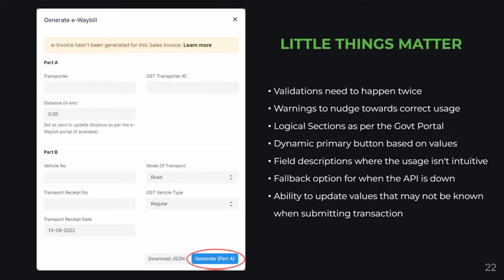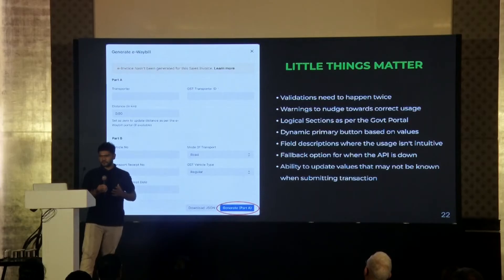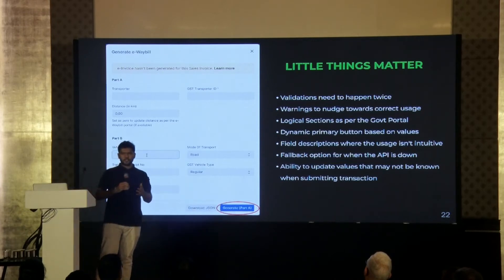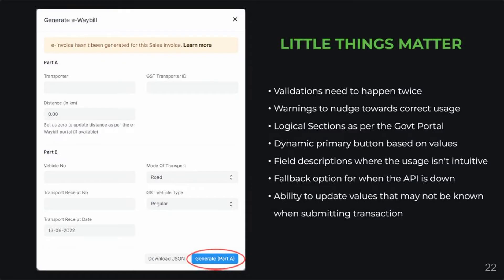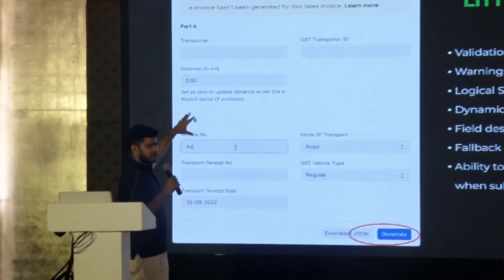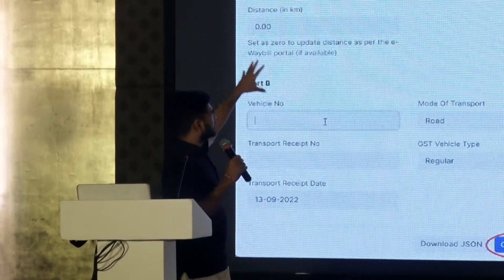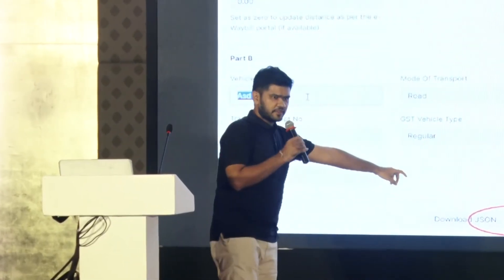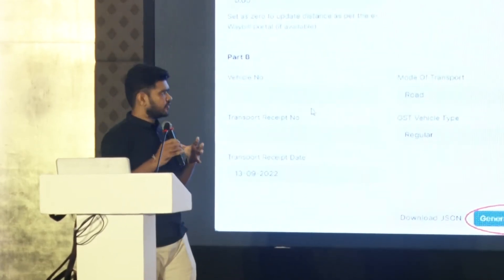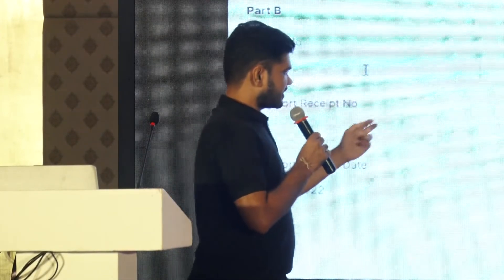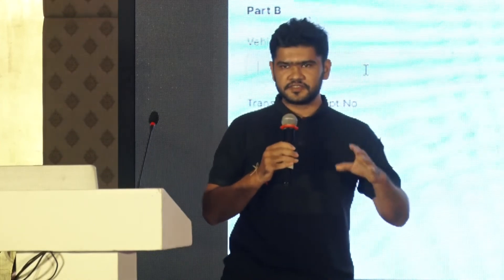One important thing that Sagar really cares about, and that I learned from him, is that little things matter. With great UX, you need to start by caring for very small things. This is a simple e-way bill generate dialogue where you generate e-way bill manually if required. It starts with having validations both in the UI and in the backend. One specific detail: the primary button changes state based on the response, even though the event handler is the same.